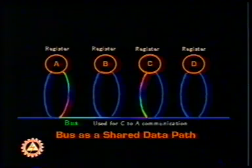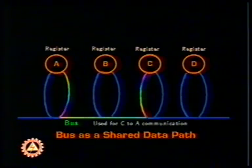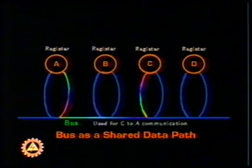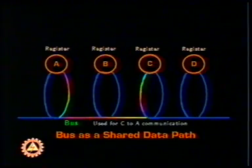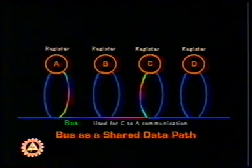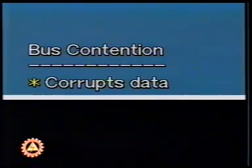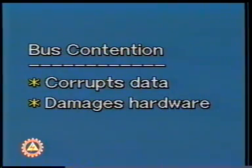The shortcoming of a bus is that it can support only one source of data at a time. If two registers put their data on the bus simultaneously, the result would be unpredictable. This is known as bus contention. In bus contention, not only does the data get corrupted, but some hardware damage may also occur. To prevent bus contention, a mechanism of access control is used so that only one source can put data on the bus at any point in time.